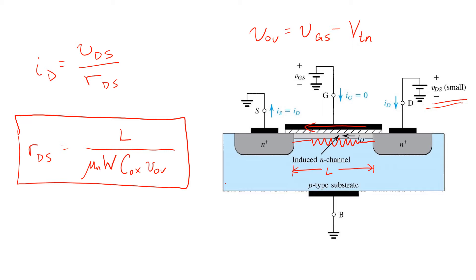Remember that this applies when the channel region is inverted, that is, when the gate source voltage exceeds the threshold voltage so that the overdrive voltage is positive, and when small values of VDS are applied.